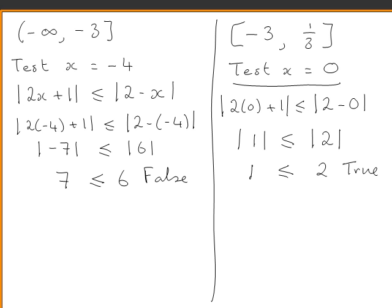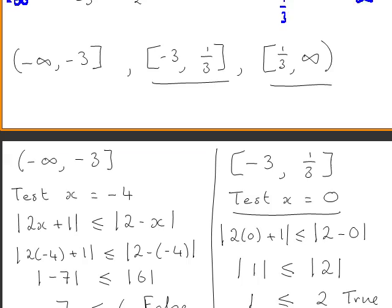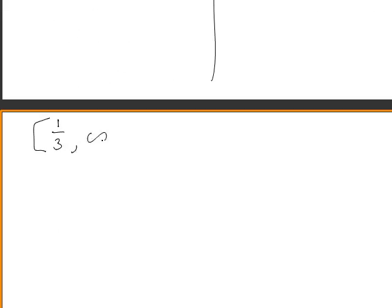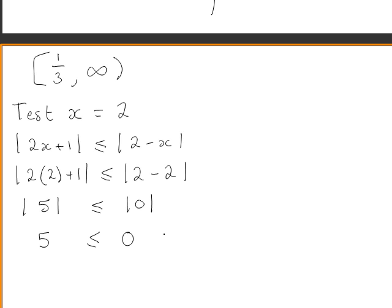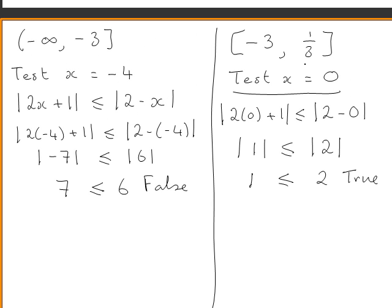We also test the third interval, one third to infinity, using x equals 2. Substituting x equals 2 into the original inequality gives 5 less than or equal to 0, which is false. So the interval in which our solution lies is the interval from minus 3 to one third.